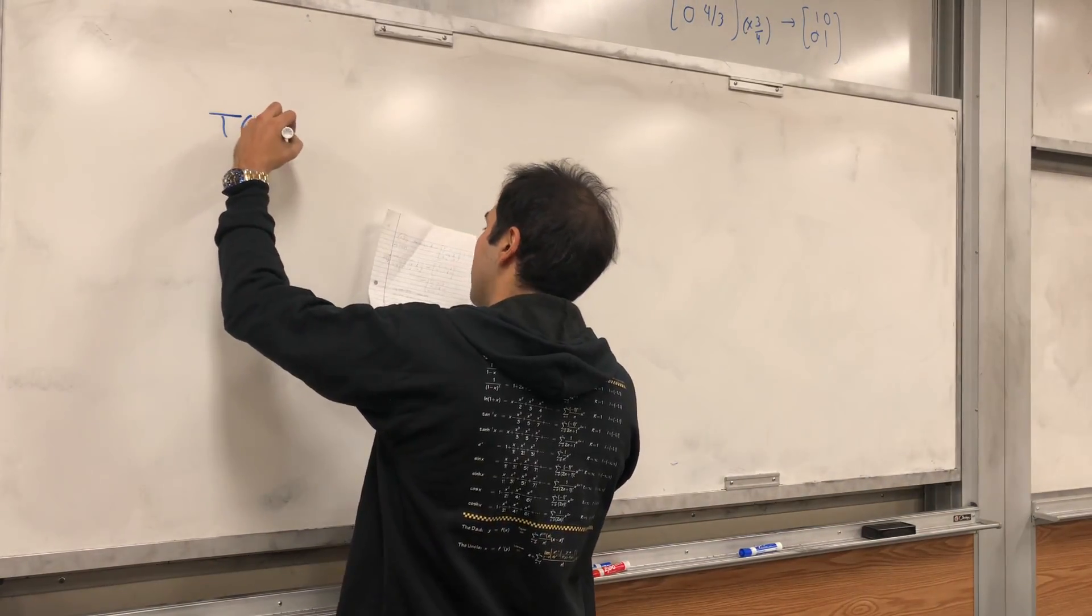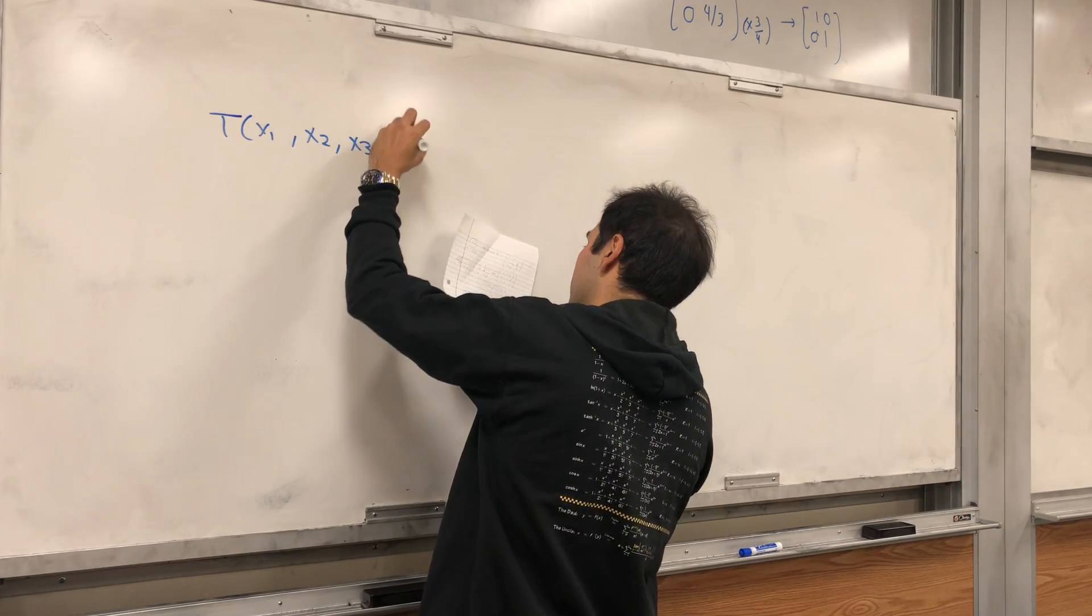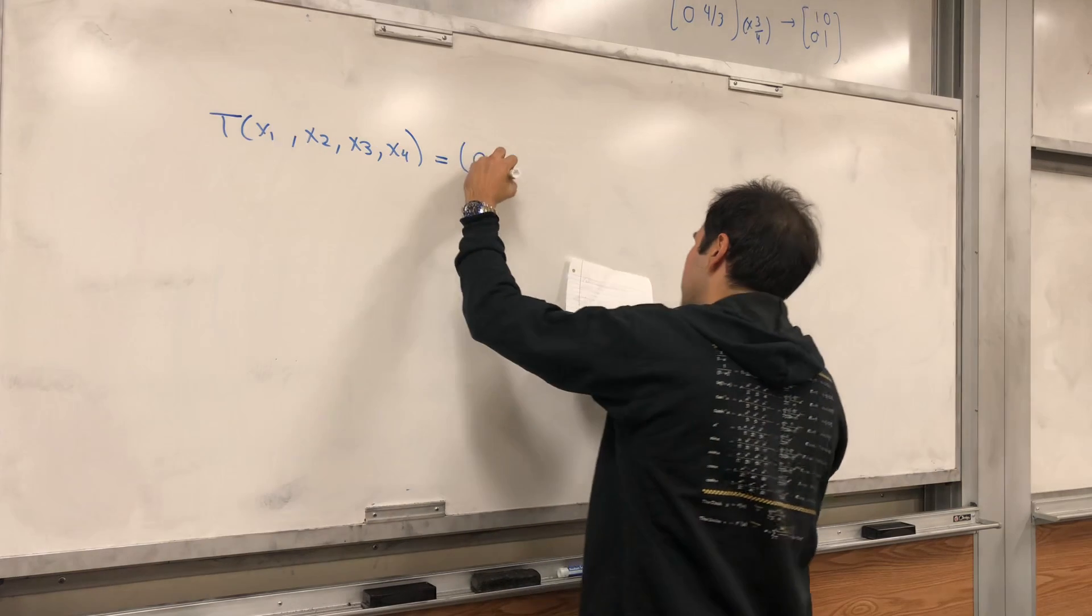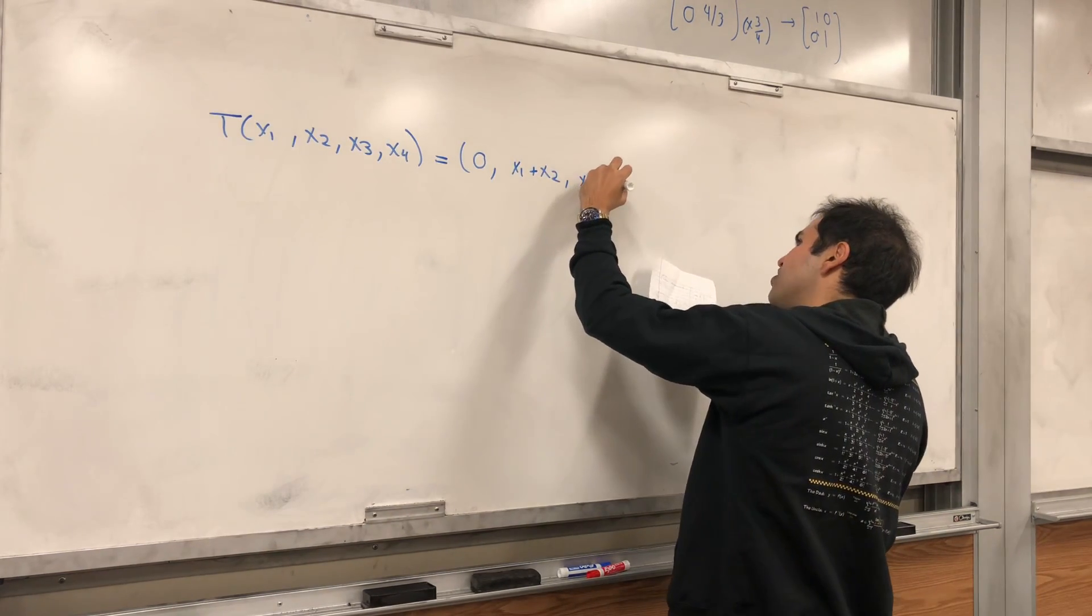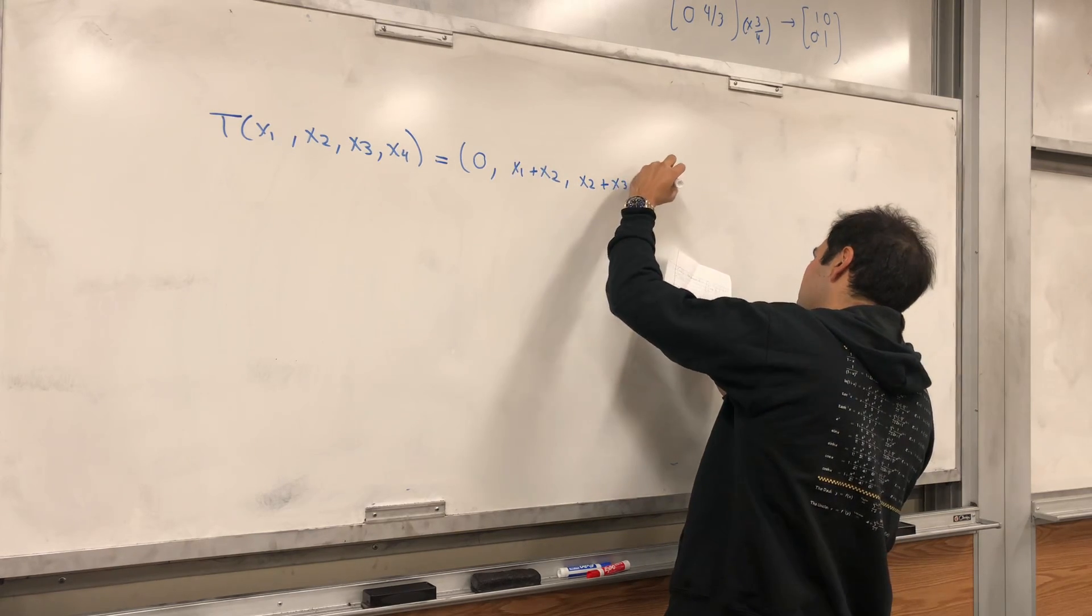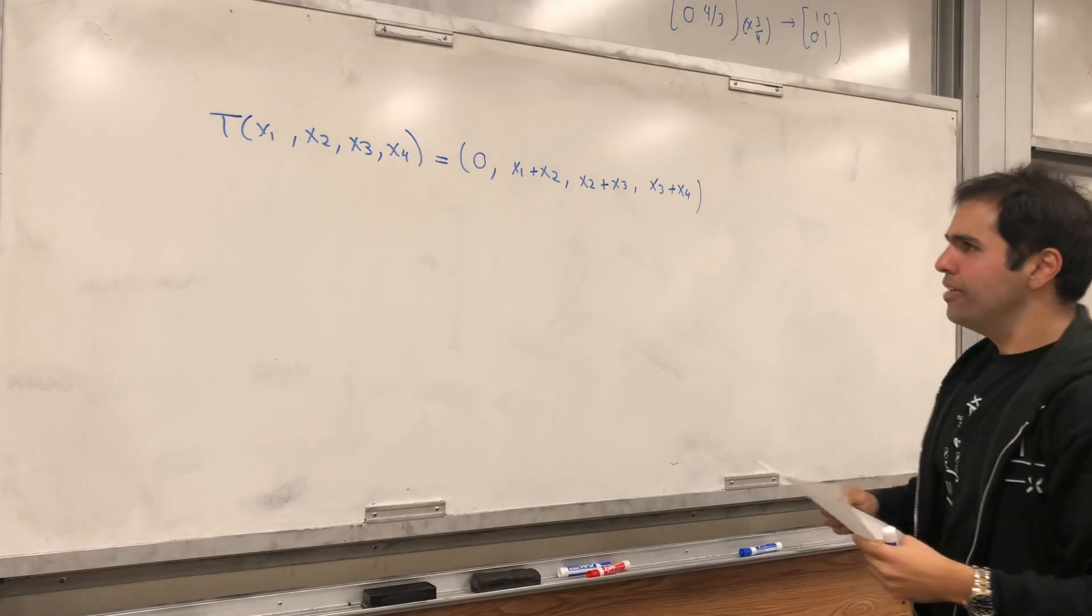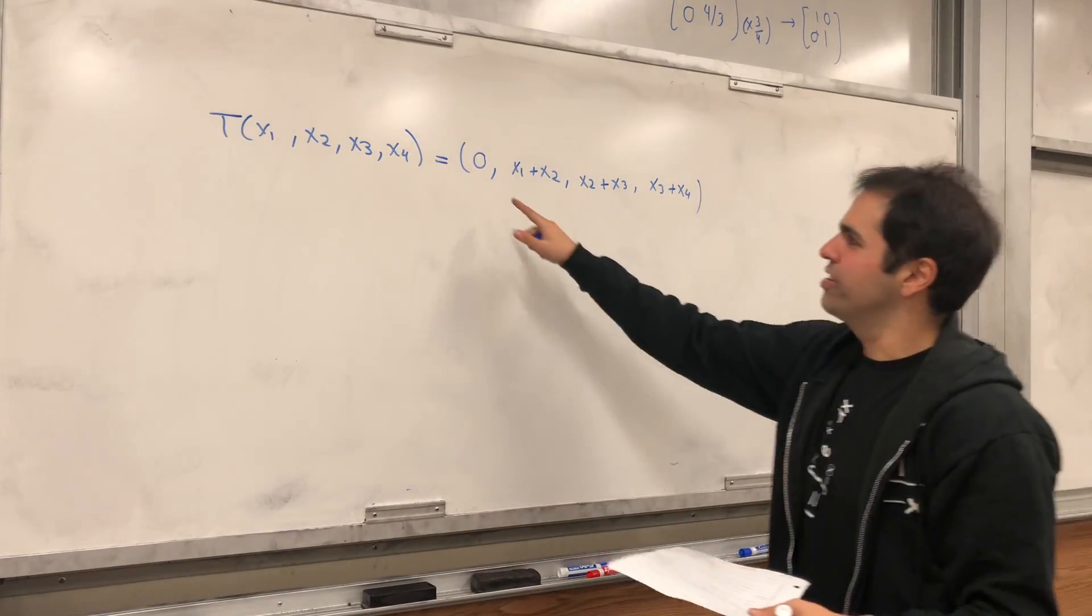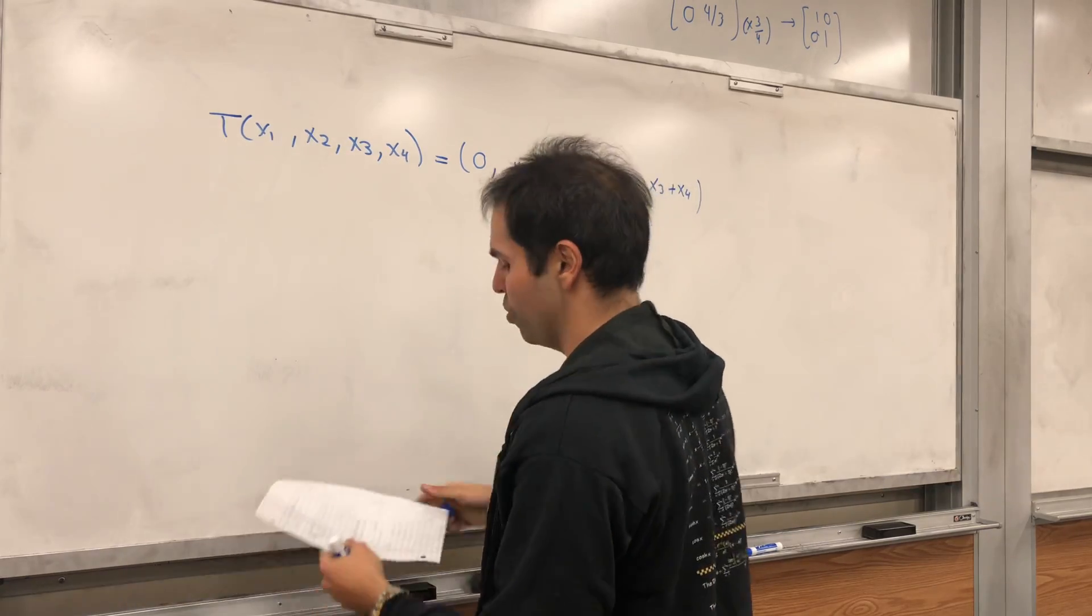So here is a linear transformation. t of x1, x2, x3, x4 equals 0, x1 plus x2, x2 plus x3, x3 plus x4. So it's a cute linear transformation. It's like it's 0 and then it adds up those ones, those ones, and those ones.